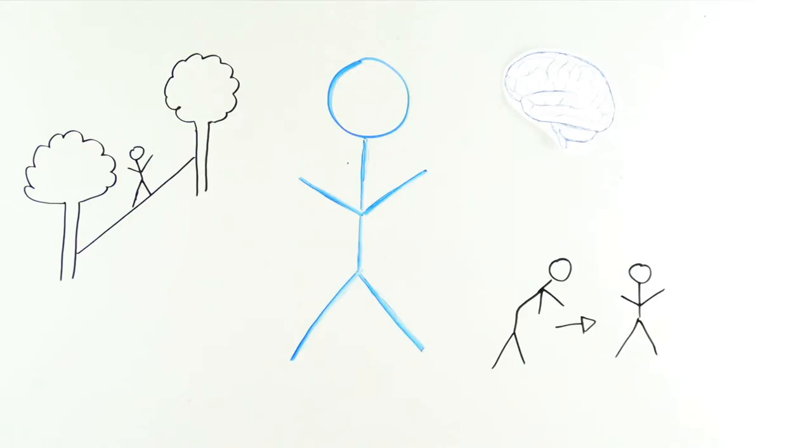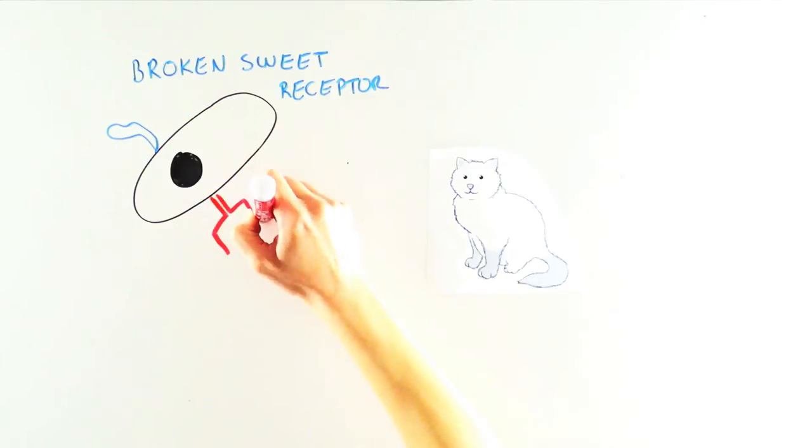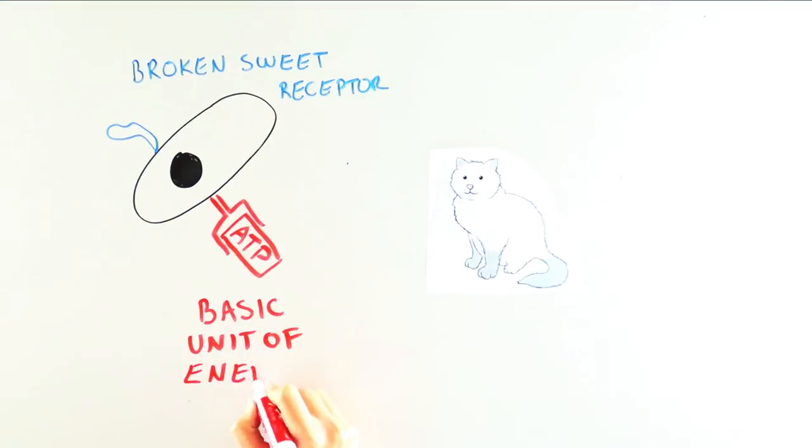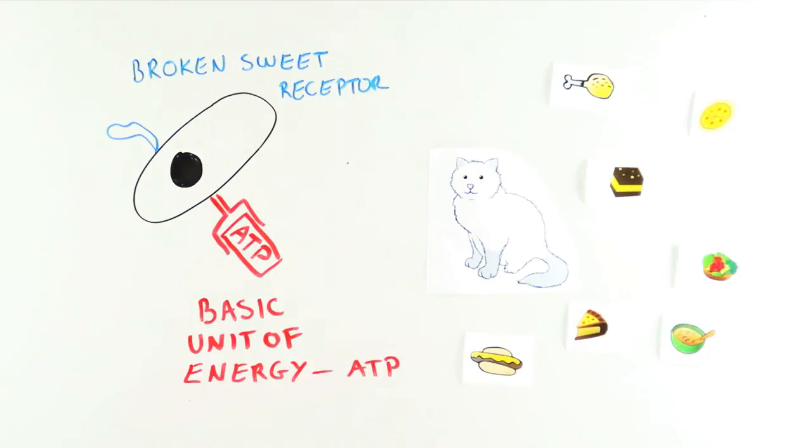The story is much the same for cats. They can live just fine without a functional sweet receptor, but they've developed other traits, like the ability to taste the basic unit of energy in our body, adenosine triphosphate or ATP. And what kind of food has high amounts of ATP? You got it, meat.